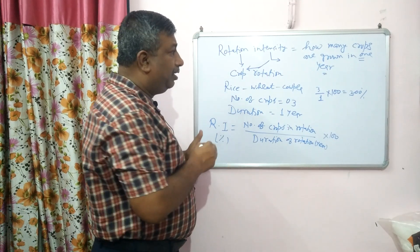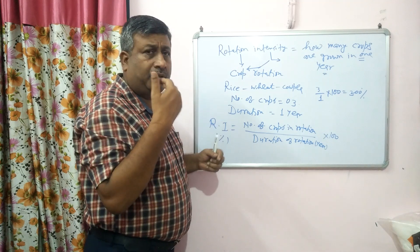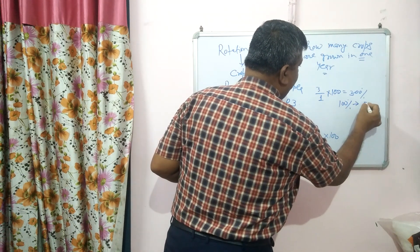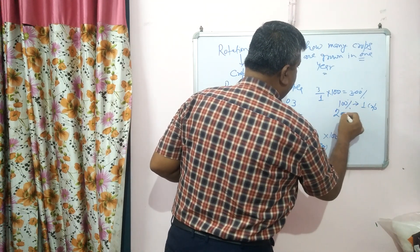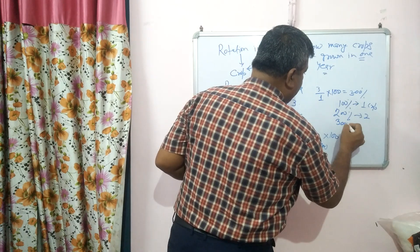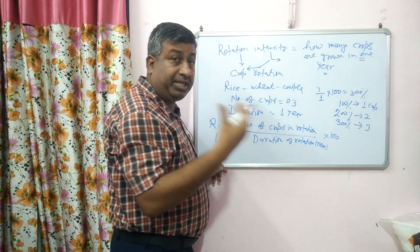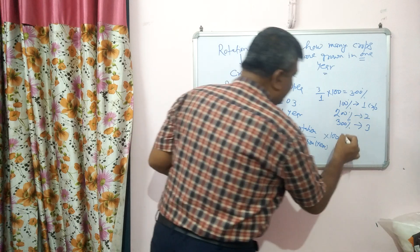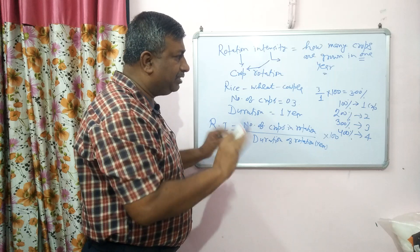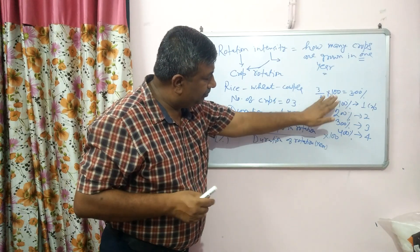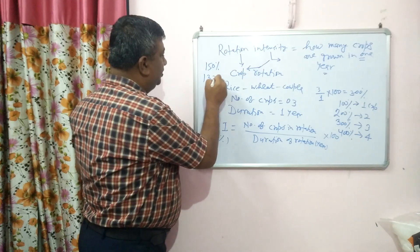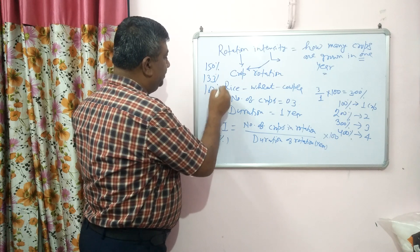This is the simple meaning of rotation intensity. If it is 100 percent, we are growing only one crop in one year. If it is 200 percent, we are growing two crops in one year. If it is 300 percent, three crops in one year. 400 percent means four crops in one year. But what if it is 150 percent, or 133 percent, or 160 percent? What does that mean?